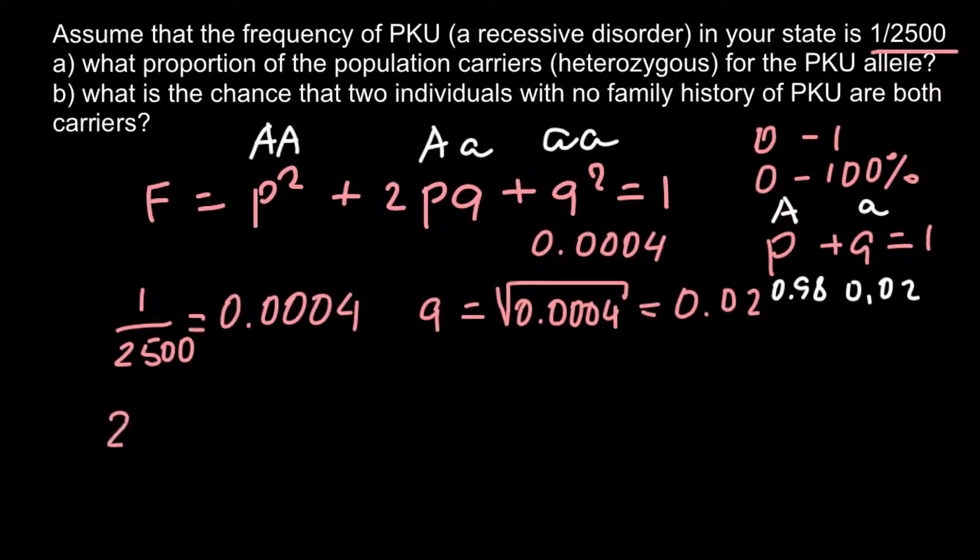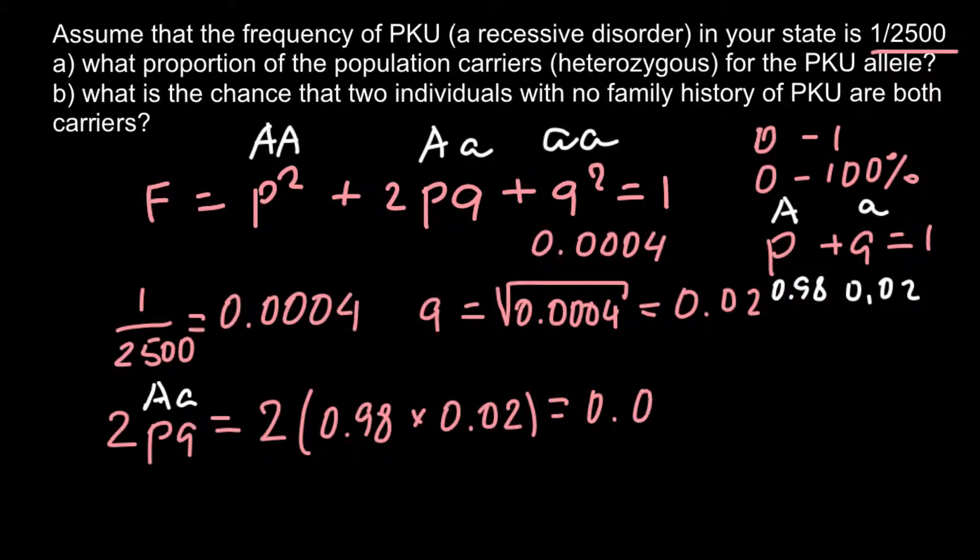So let me rewrite this part of the formula here. 2pq would equal, and once again this is heterozygous, people who are carriers would equal to 2 multiplied by number P, and this is 0.98, and multiplied by number Q, that is 0.02. And our answer would be 0.0392. Let me write this frequency here, so 0.0392. So this is going to be our answer for question A.